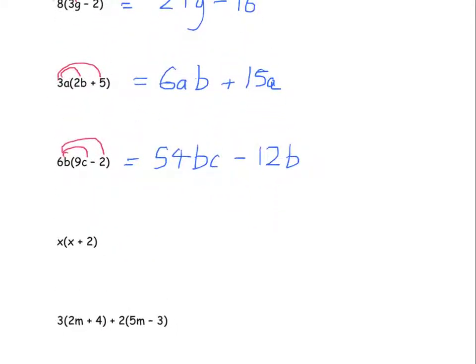Now this next one: x in brackets x plus 2. The second part is quite easy — x times 2 is 2x. But what about x times x? What does it mean when you times something by itself? Well, it means squared. So instead of writing x times x, we're actually going to put x squared, and then plus 2x.